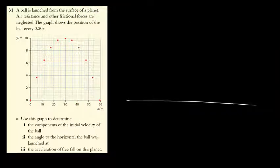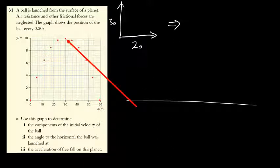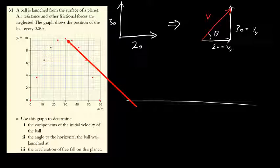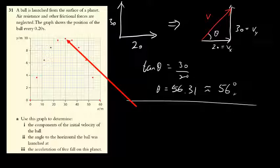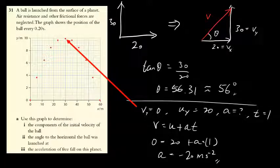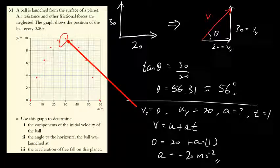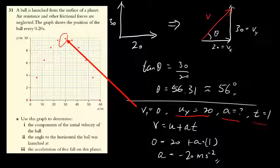For the next part, finding the launch angle of the ball: from part a you can find the different components, vertical and horizontal. You rearrange them to use tangent theta to find the angle to the horizontal. For the last part, finding the acceleration: at the fifth point the final vertical velocity is 0, the initial vertical velocity is 20, and the time from beginning to this point is 1 second. Applying the kinematic equation, you find the acceleration is negative 20 meters per second squared.